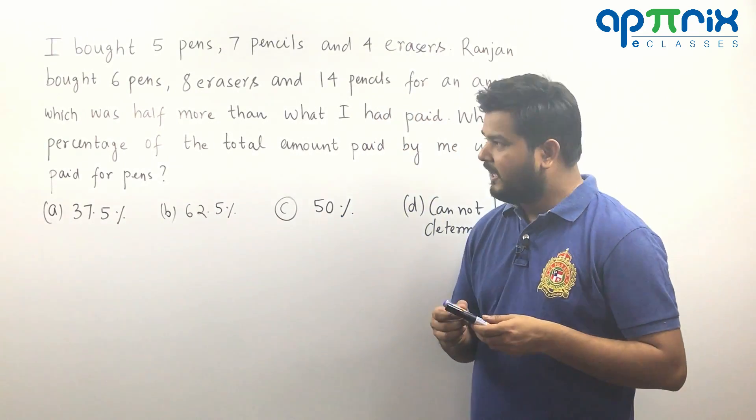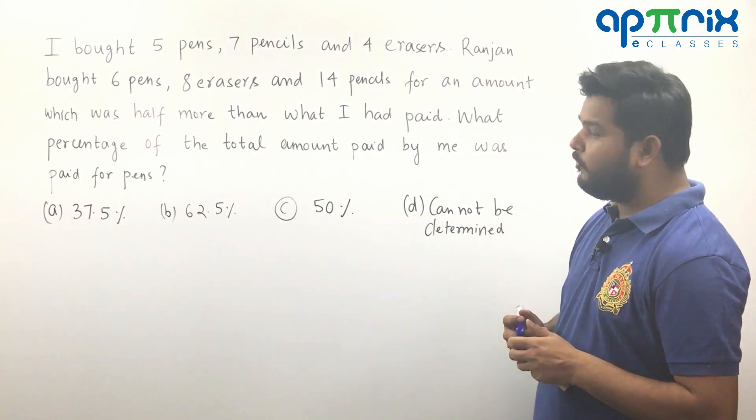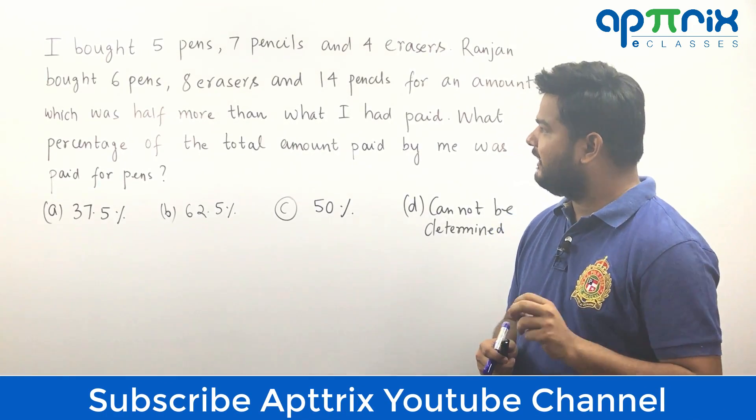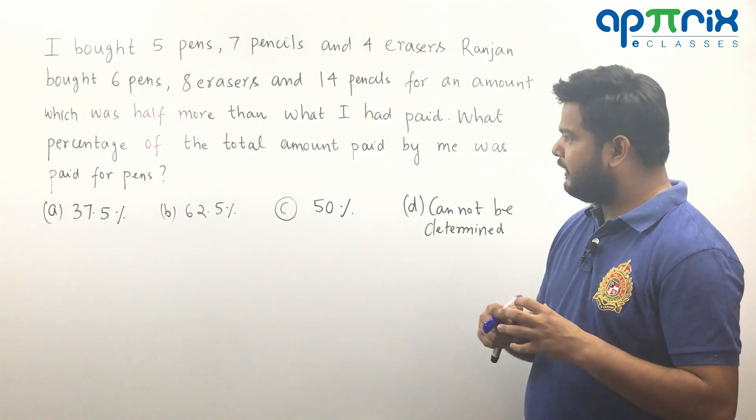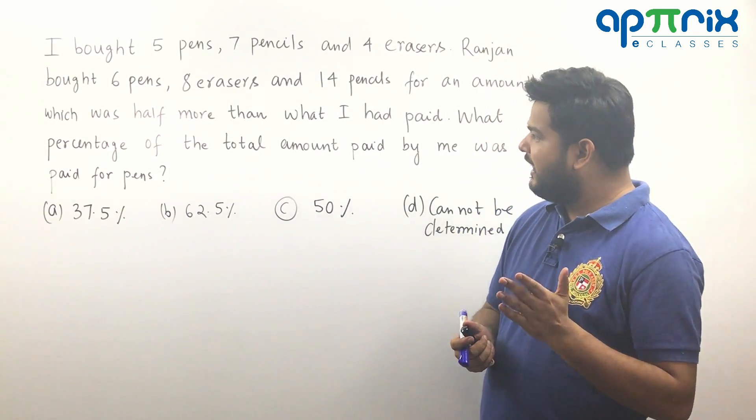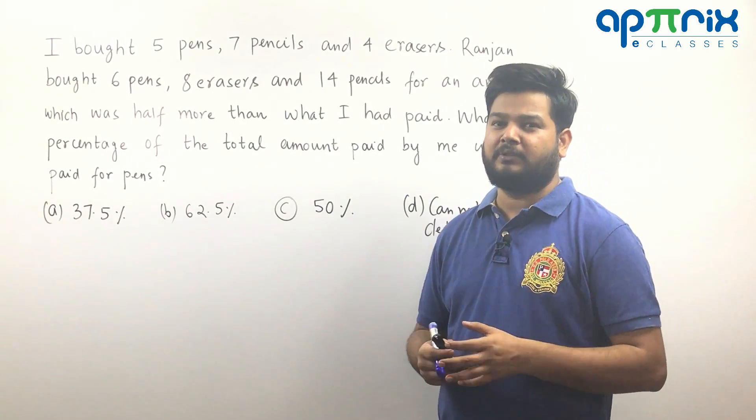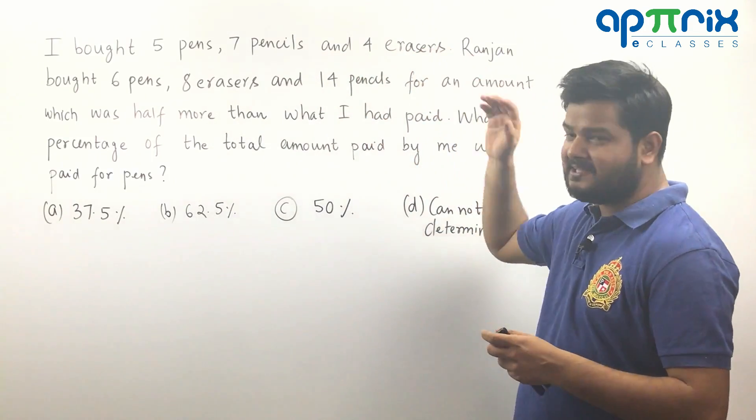This question says I bought five pens, seven pencils and four erasers. Ranjan bought six pens, eight erasers and fourteen pencils for an amount which was half more than what I had paid. So if I paid some amount for these many pens, pencils and erasers...